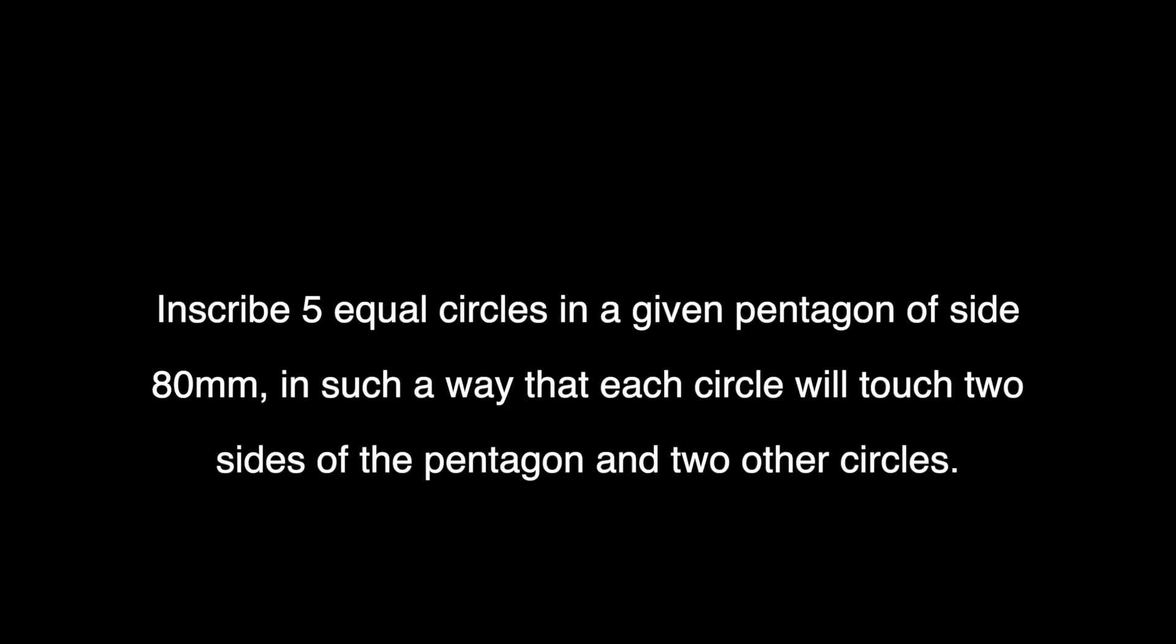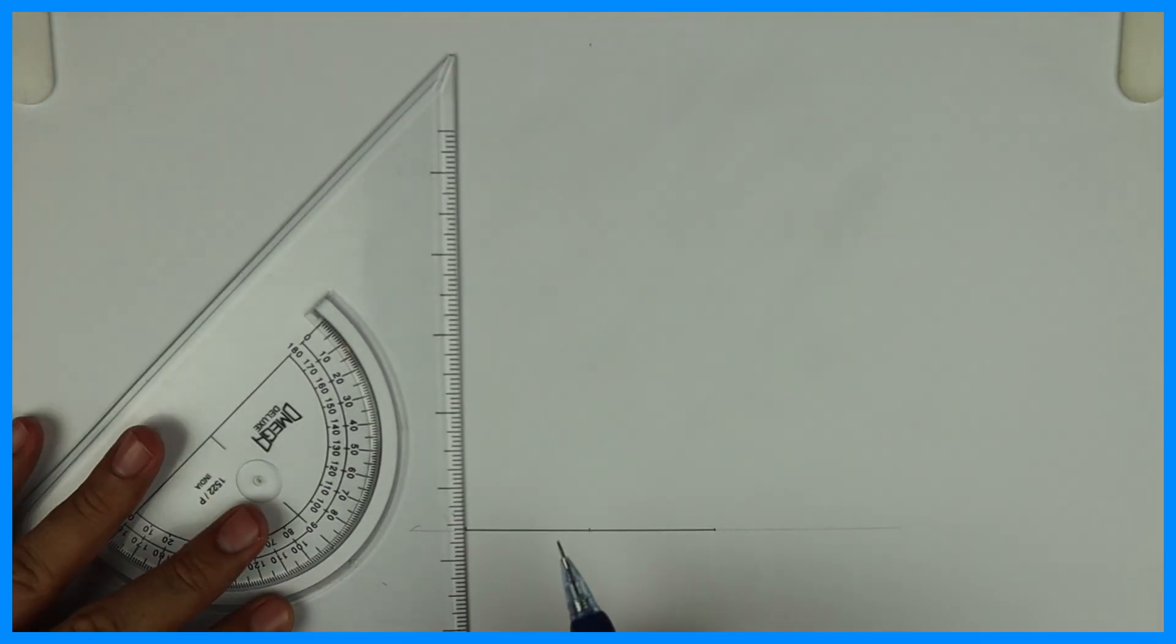Welcome to technical drawing. Today we are going to inscribe five equal circles in a given pentagon of side 80mm, in such a way that each circle will touch two sides of the pentagon and two other circles.